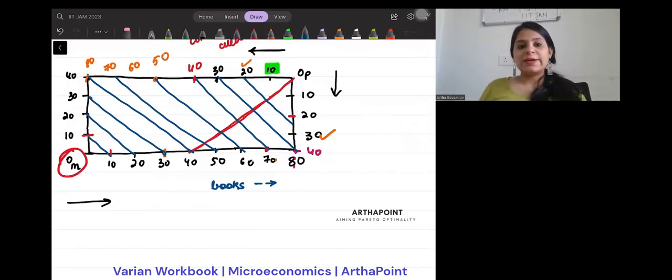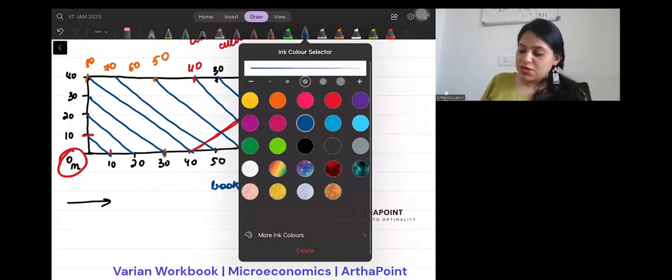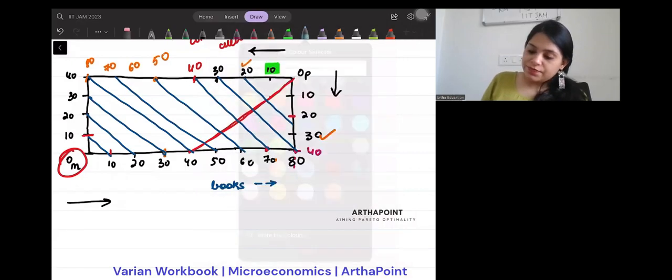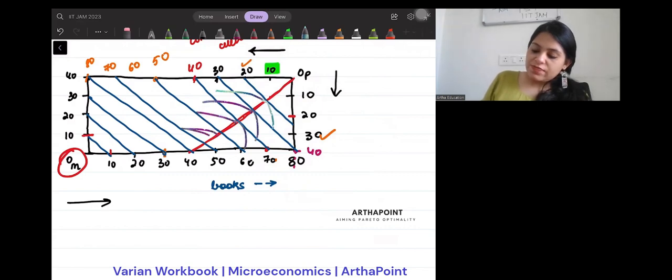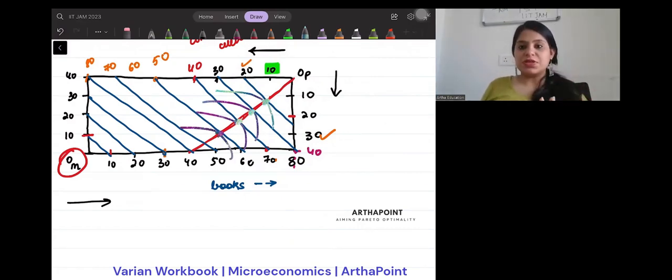So what do we have to ensure? We have to ensure that when we make Philip's utility function, they're tangent. So let me use another color for it, something like this. These are the utility functions of Philip. And this tangency is achieved along this contract curve. Are you getting it? This is what this means, that this is where you achieve this Pareto efficiency.